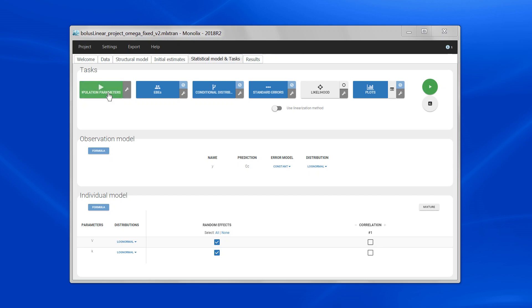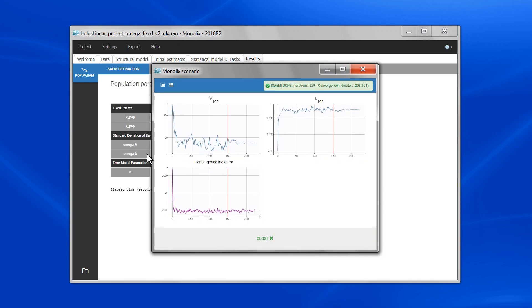When I run the task, I can follow how the population parameters evolve over the iteration of the algorithm. SAEM works in two phases. During the first one, called exploratory, the goal is to explore the parameter space a lot and get to a neighborhood of the maximum likelihood.